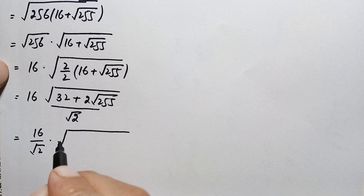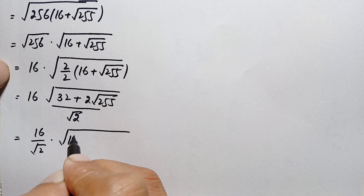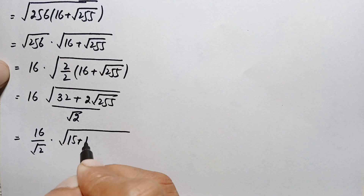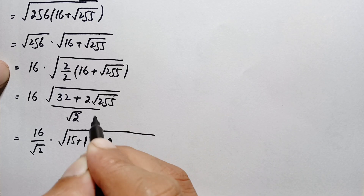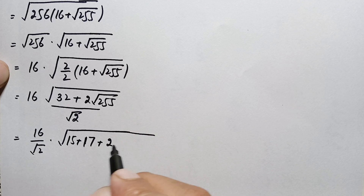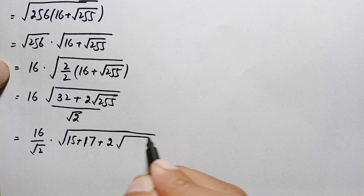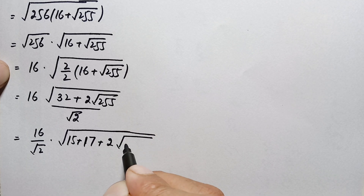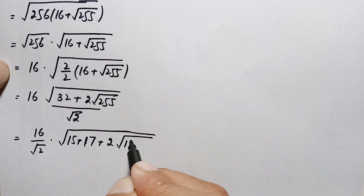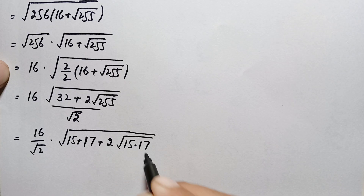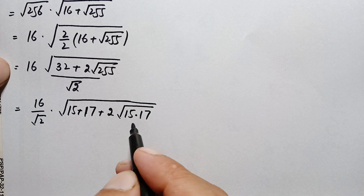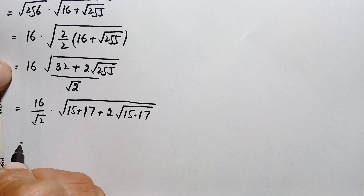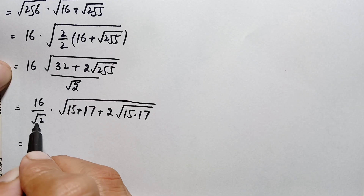We can write 32 as 15 plus 17, and 2 times square root of 255 can be written as 2 times square root of 15 times 17, since 255 equals 15 times 17. So the expression inside the square root becomes 15 plus 17 plus 2 times square root of 15 times 17.